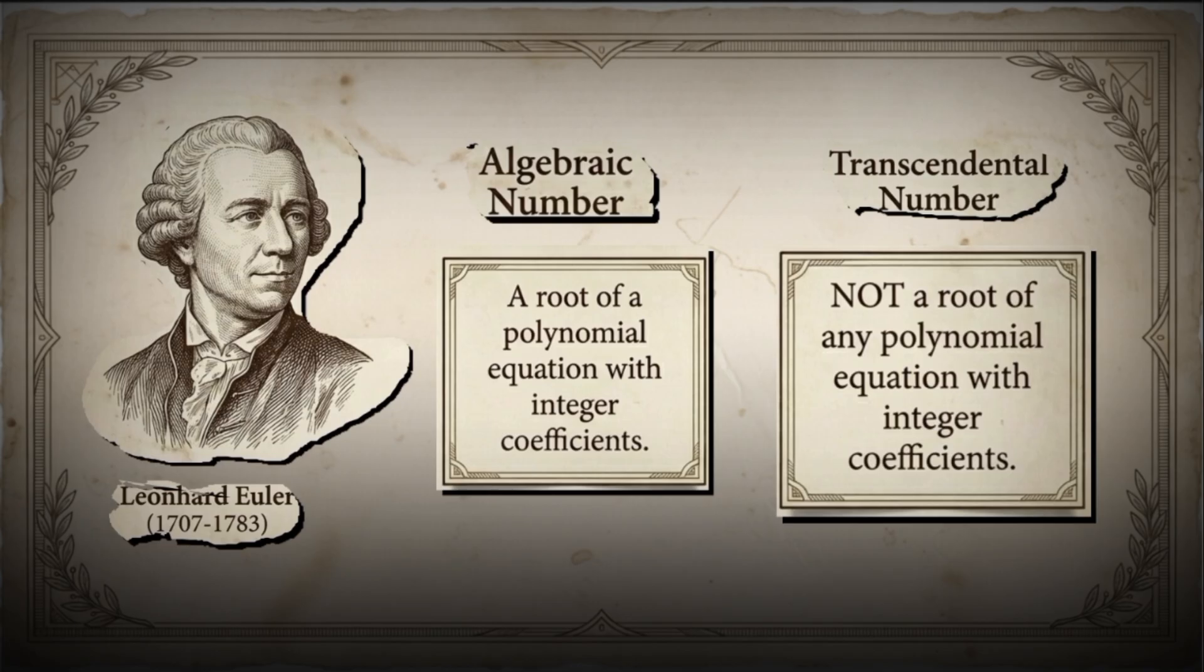Here's the challenge. Algebraic numbers are roots of equations, so we can calculate them directly. For instance, solving x squared minus 3 equals 0 gives us square root of 3. But transcendental numbers? Numbers that aren't roots of any polynomial equation, how do we even find them? We can't just solve an equation. Since they can't be calculated this way, how do we know they exist?